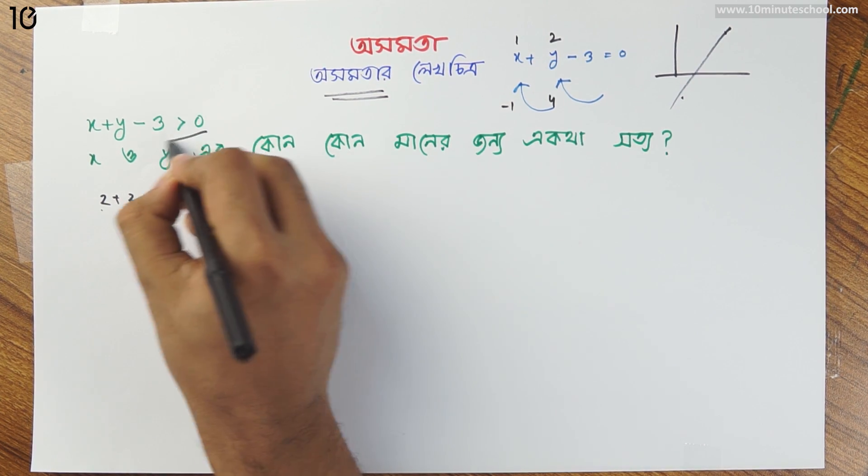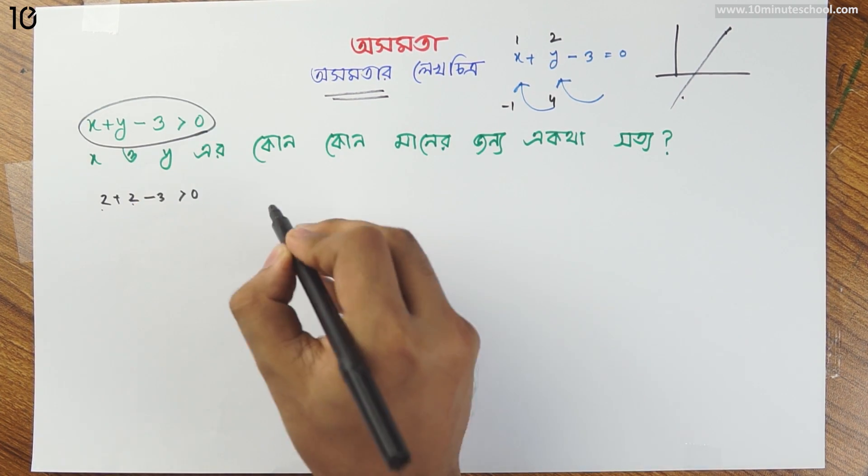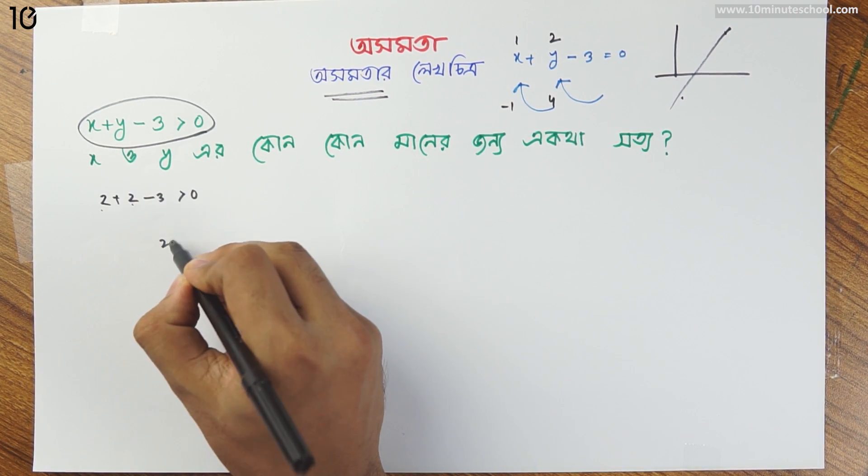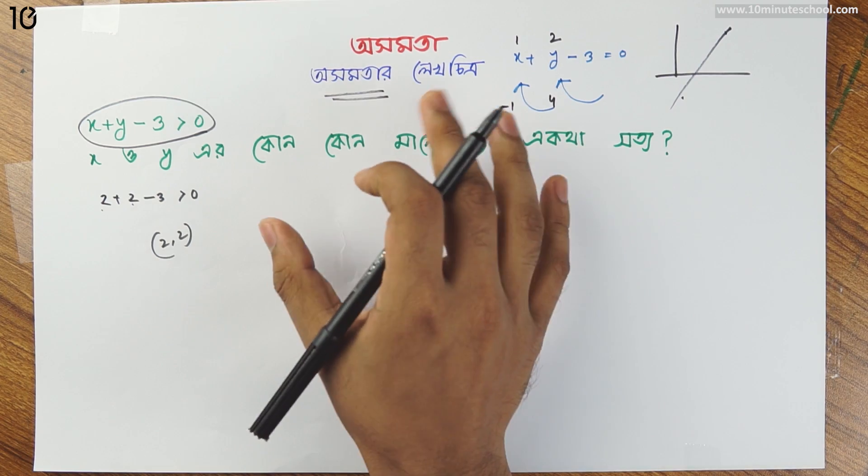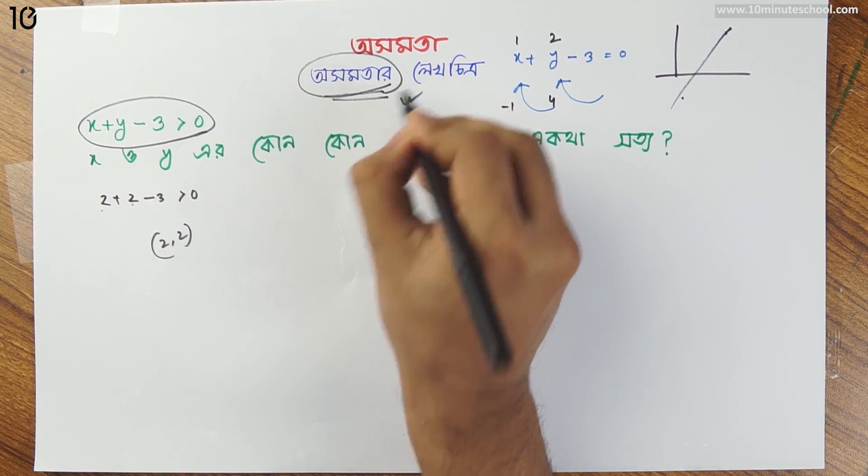This is the point (0, 2), and 2 is equivalent to this number.